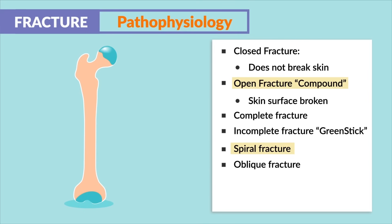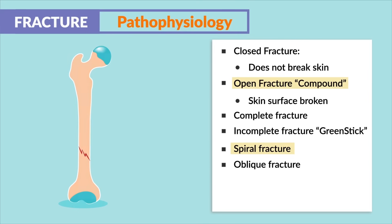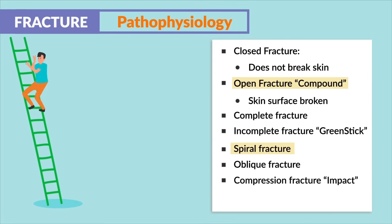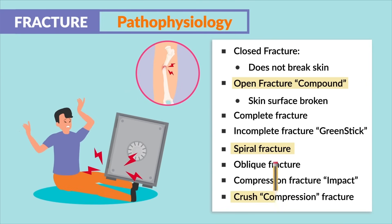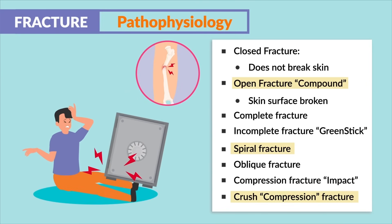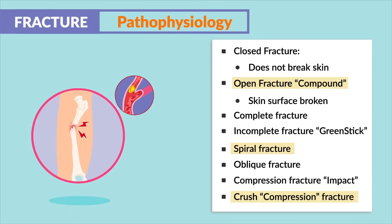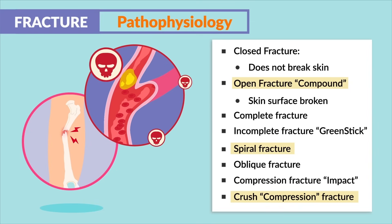Next is an oblique fracture — a fracture at an angle — and then a compression fracture, known as an impact fracture, where bones are compressed like after a high fall or even a jump. Lastly, we have a crushing or compression fracture where bones get crushed under a heavy object, like dropping a safe on your leg. This one places the client at high risk for a deadly fat embolism.